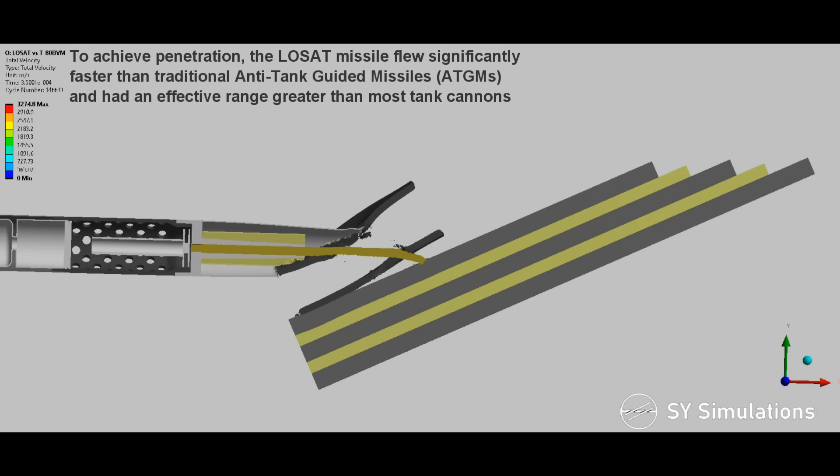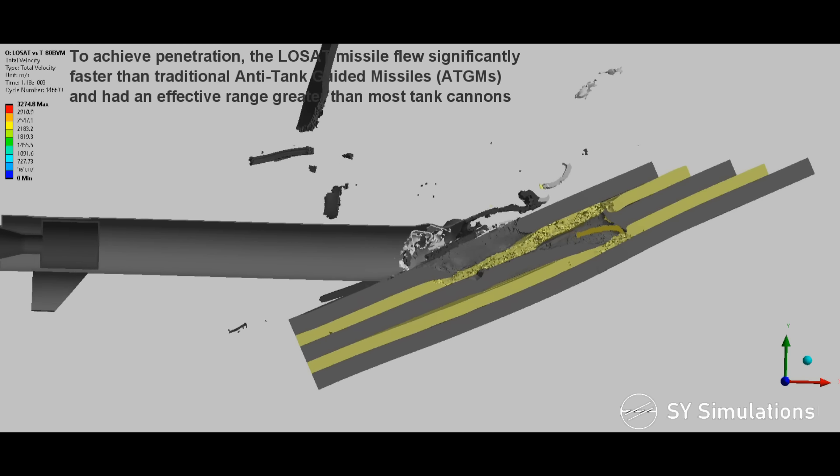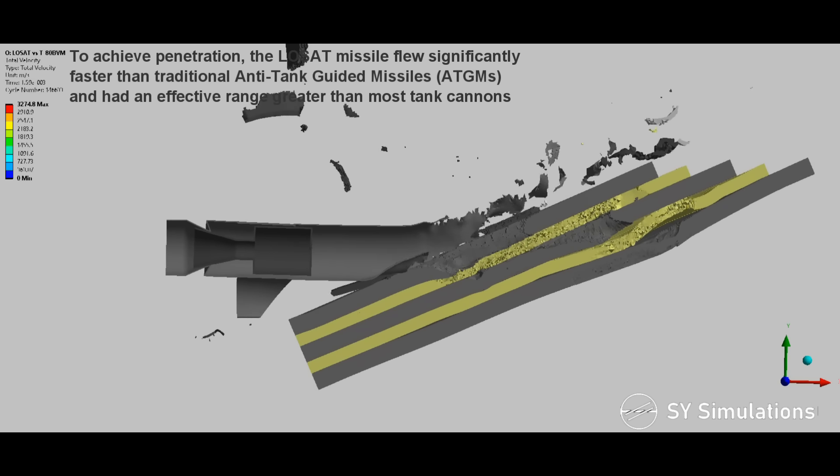To achieve penetration, the LOSAT missile flew significantly faster than traditional anti-tank guided missiles and had an effective range greater than most tank cannons.